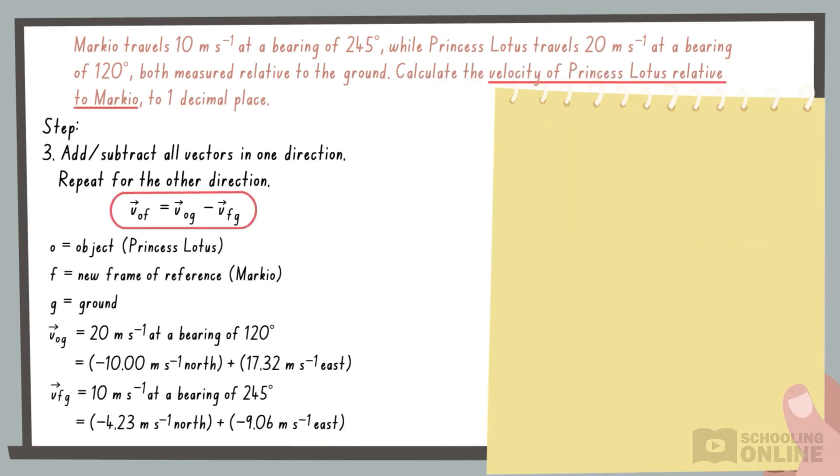The relative velocity equation tells us to find VOG minus VFG. By subtracting the north components, we get minus 5.77 metres per second north. Likewise, by subtracting the east components, we obtain 26.38 metres per second east.